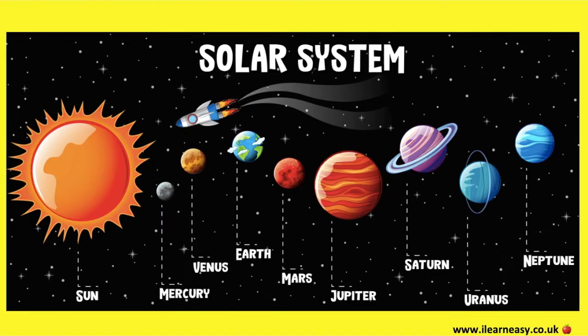The planets are always in the same order from the sun: Mercury, Venus, Earth, Mars, Jupiter, Saturn, Uranus, and Neptune.